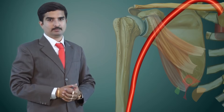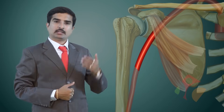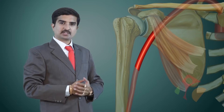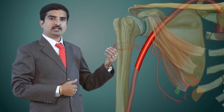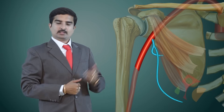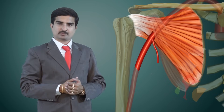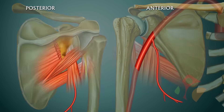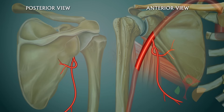The third part of the axillary artery gives off three branches. The first is the subscapular artery, which is the largest branch of the axillary artery. It arises from the lower border of the subscapularis muscle, passes through the upper triangular intermuscular space, winds around the lateral border of the scapula, reaches the infraspinous fossa, and finally ends by dividing into numerous branches.